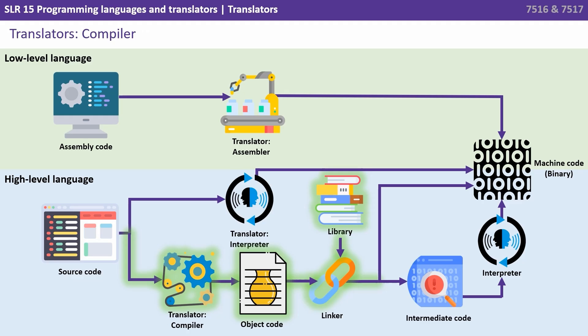In this bottom path we see the source code being translated by a compiler. Typically we have some object code produced, and then a linker will pull in any pre-compiled functions from libraries. At this point a couple of things could happen. Either the finished output is optimized and turned directly into machine code, or the code gets further translated into what we call intermediate code, which can then run on a number of machines given certain circumstances. An interpreter can then turn this intermediate code into machine-specific code. We look at intermediate code in another video.